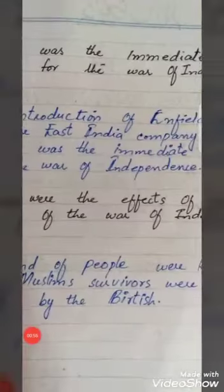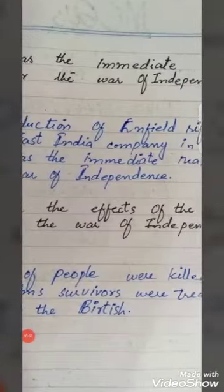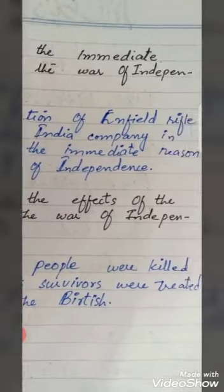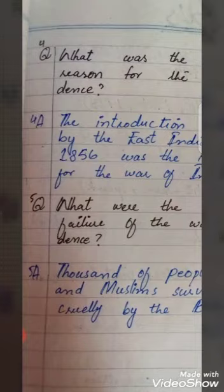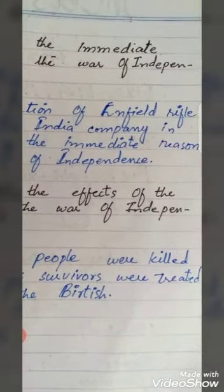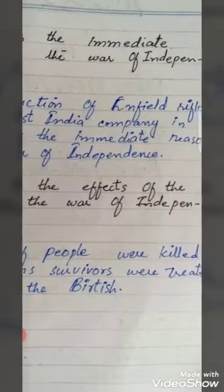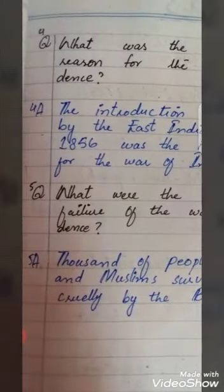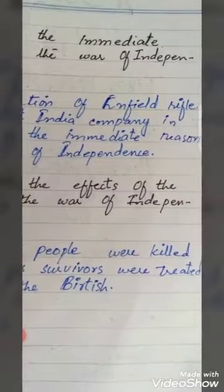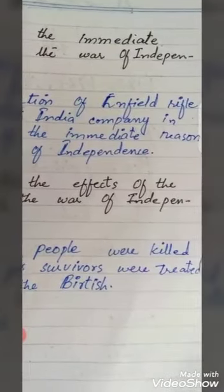Question number four: What was the immediate reason for the war of independence? Answer: The introduction of the Enfield rifle by the East India Company in 1856 was the immediate reason for the war of independence.